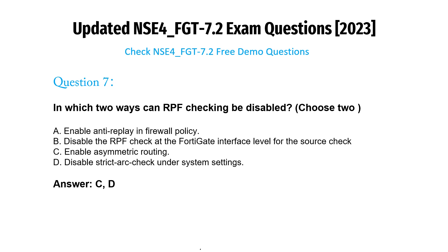Question 7: In which two ways can RPF checking be disabled? A) Enable anti-replay in firewall policy. B) Disable the RPF check at the FortiGate interface level for the source check. C) Enable asymmetric routing. D) Disable strict arc check under system settings. Answer: C, D.